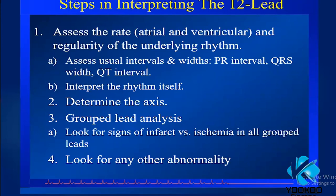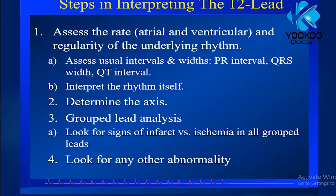The next step is interpreting the 12-lead ECG. Steps include: assessing heart rate — both atrial and ventricular — and the regularity of the underlying rhythm; assessing usual intervals like PR interval, QRS width, and QT interval; interpreting the rhythm itself; determining the axis; performing group lead analysis looking for signs of infarction versus ischemia; and looking for any other abnormalities.